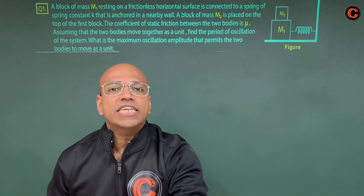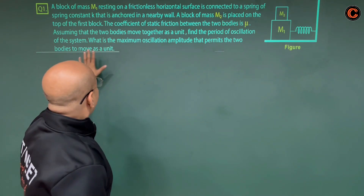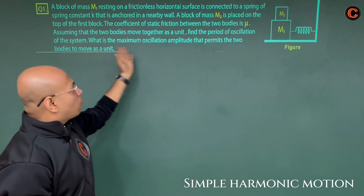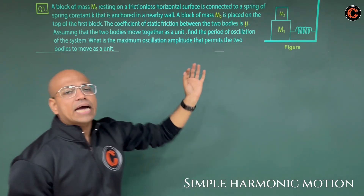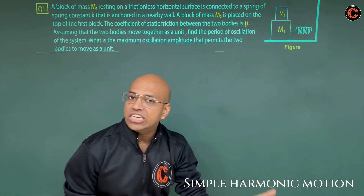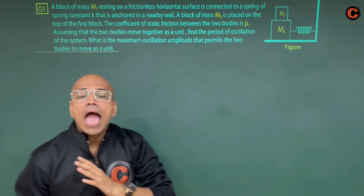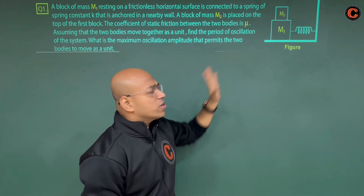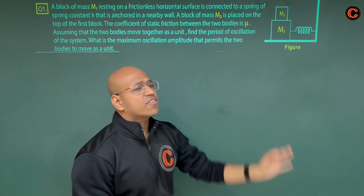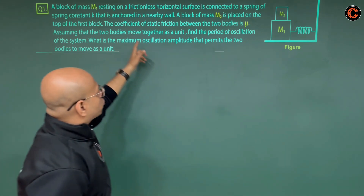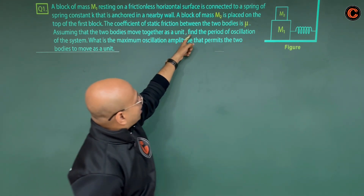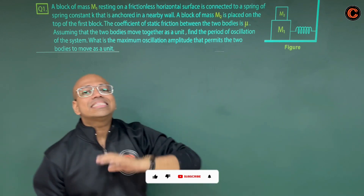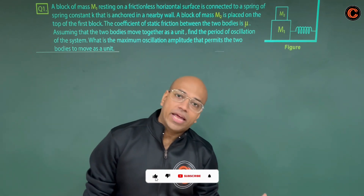The coefficient of static friction is mu. The question says: find the time period of SHM and the amplitude. This question is perfect for NEET level — it is very common.